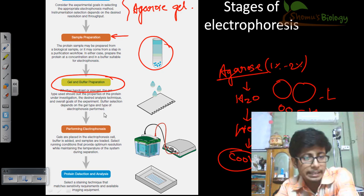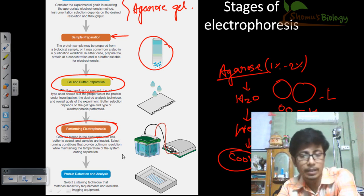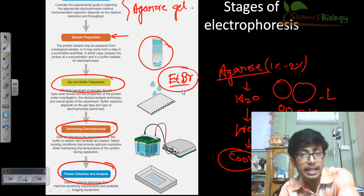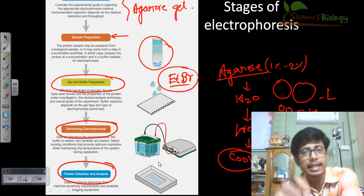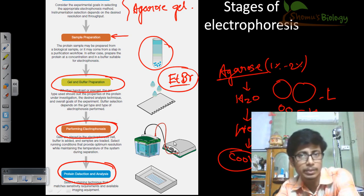Once the gel is prepared, you perform the electrophoresis by connecting the electrodes properly and filling the chambers with buffer. Once the run is complete, you detect the results by staining. For DNA agarose gel electrophoresis, ETBR (ethidium bromide) can be used, but it is mutagenic and toxic. Non-toxic stains are now available in the market. After staining and visualization, you can also cut out the gel band, degrade the gel, and extract that DNA or protein for further processing.